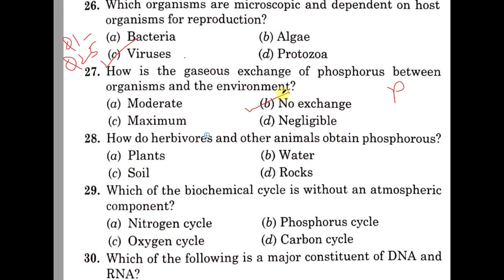Question number 28. How do herbivores and other animals obtain phosphorus? A: Plants, B: Water, C: Soil, D: Rocks. The correct answer is option A, Plants.